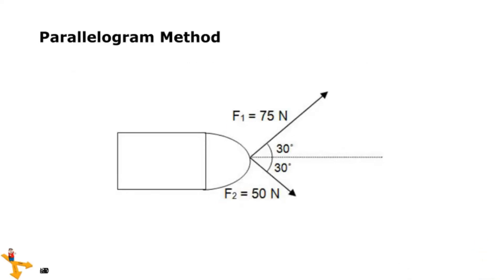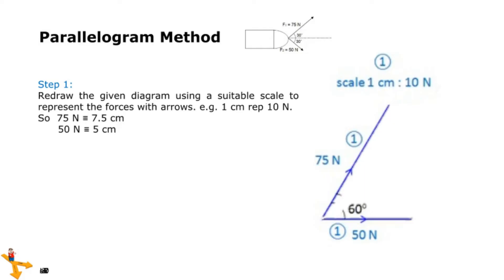Using the parallelogram method. Step 1: Redraw the given diagram using a suitable scale to represent the forces with arrows. Note, 1 centimeter represents 10 newtons. So 75 N equals 7.5 centimeters, and 50 N equals 5 centimeters.